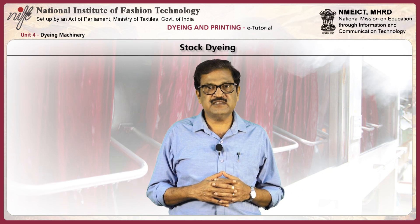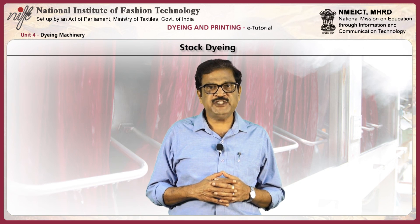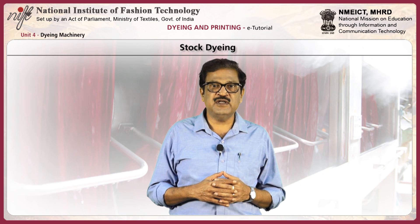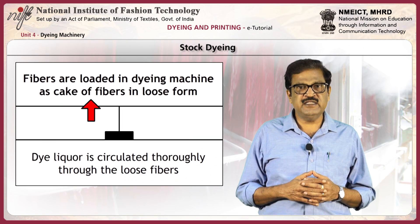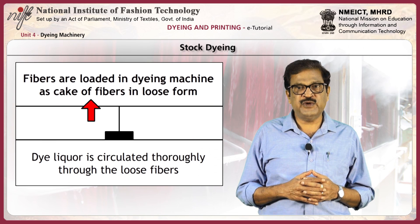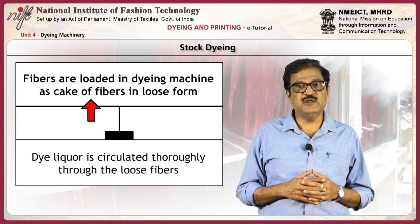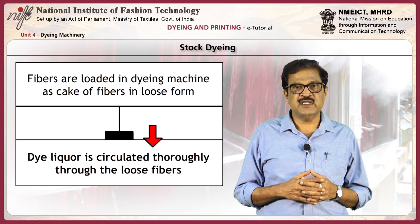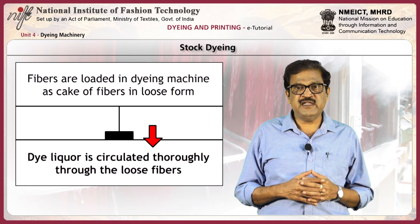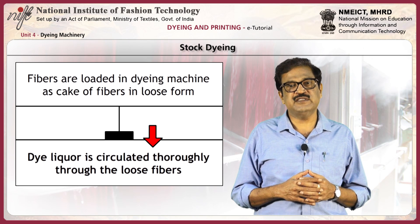First, we will discuss about coloration at fiber stage. Coloration at fiber stage is called stock dyeing. Stock dyeing is carried out at fiber stage. In this case, the fibers are loaded in the dyeing machine as a cake of fibers in loose form. Dye liquor is circulated thoroughly through the loose fibers, enabling better penetration of dye through the fibers.